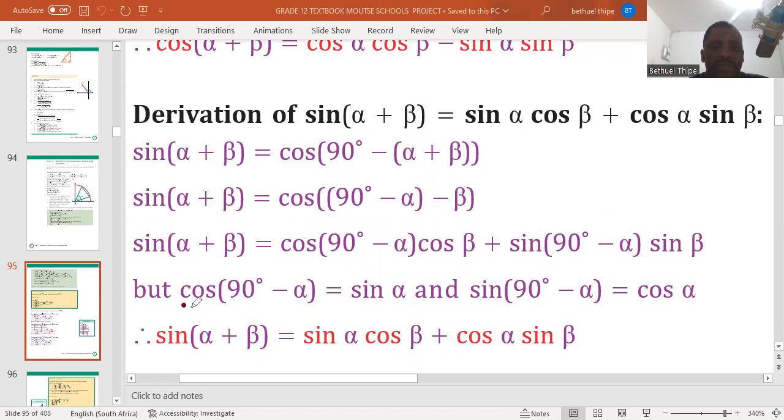Another thing is for you to remember the concept of co-function. That the co-function, of course, is sine. The co-function of sine is cos. We call them the co-functions because we have 90 here.